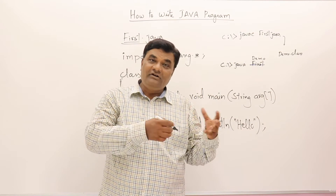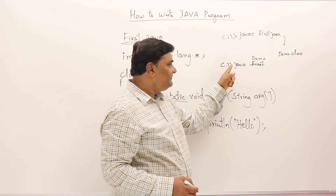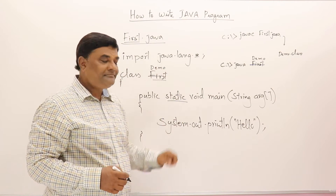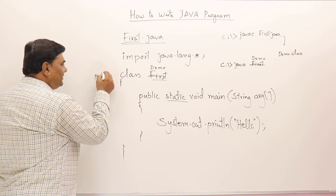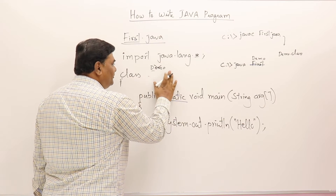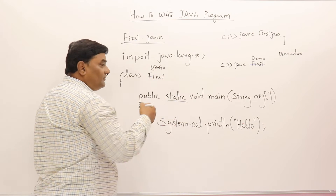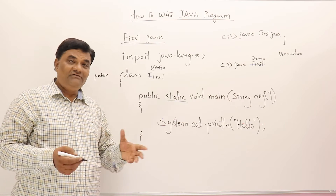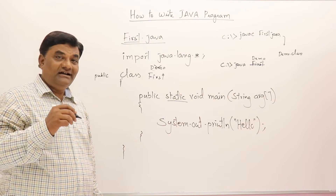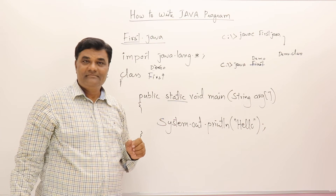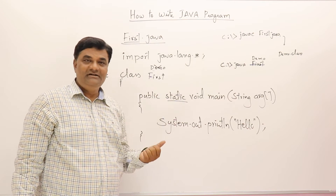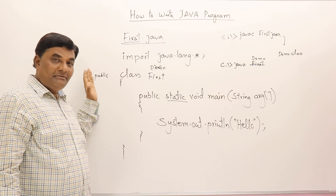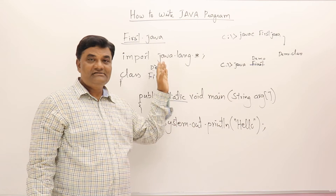The compiler creates a class file based on the class name inside the program, not the filename. For execution you say java demo. However, one important rule: if you write the class as public, you cannot give any other filename - you must give the same name as the class. A public class is visible everywhere in any Java program, so the file name must match the class name. If the class is declared public, the filename must be the same.